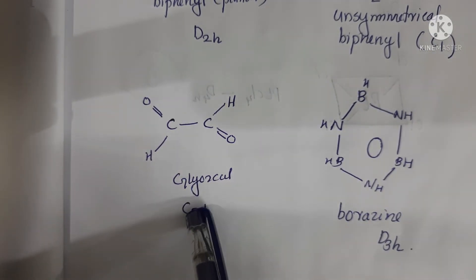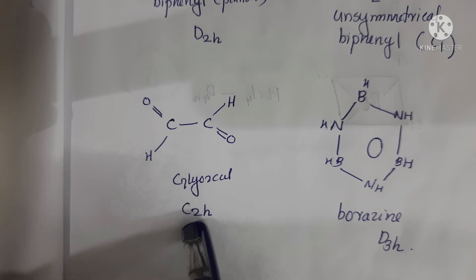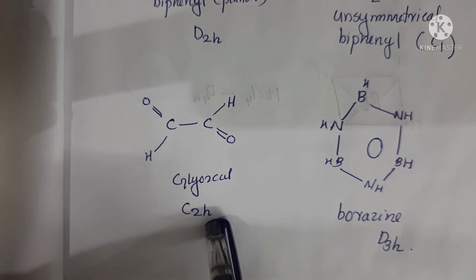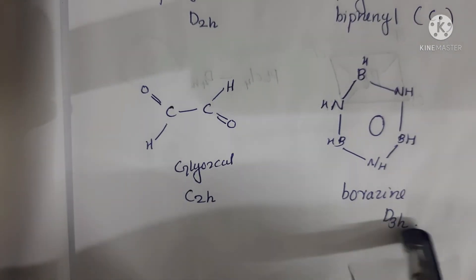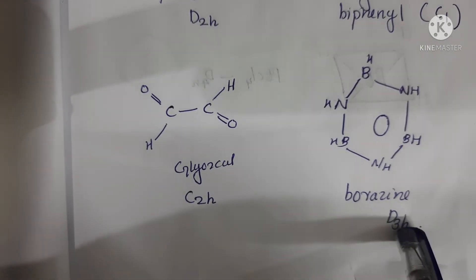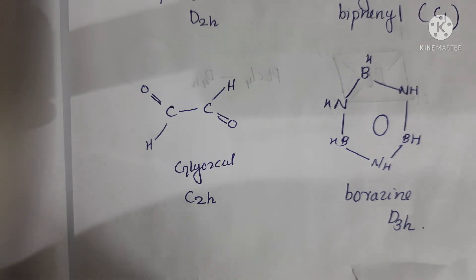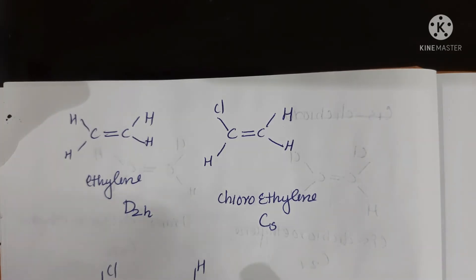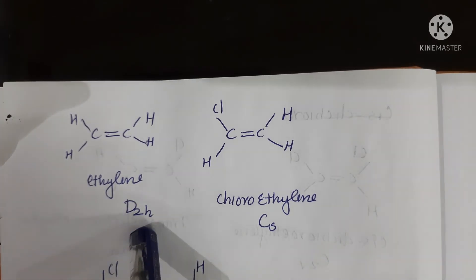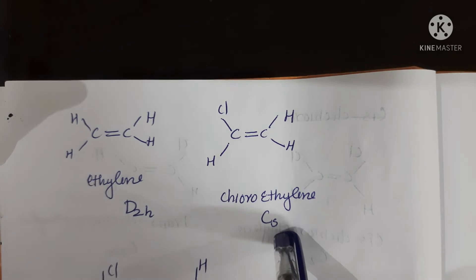Glyoxal is C2H point group. Borazine is D3H point group. Ethylene is D2H point group and chloroethylene is Cs point group.